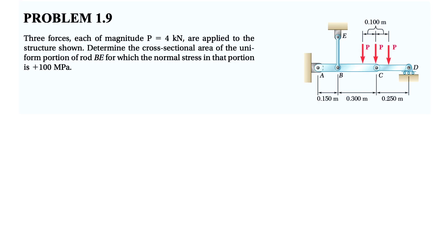All right guys, welcome back. We're going to be solving another question from the first chapter of the Beer-Johnston textbook, question 1.9. We have three forces, each of magnitude P which is 4 kilonewtons, applying at the structure that we can see. We need to determine the cross-sectional area of uniform portion of rod BE for which the normal stress in that portion is 100 megapascals.